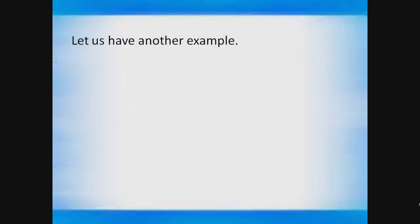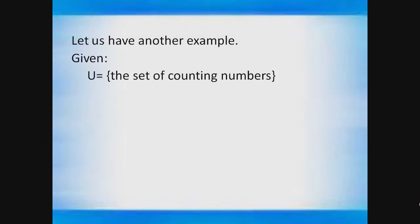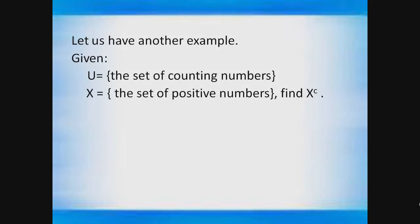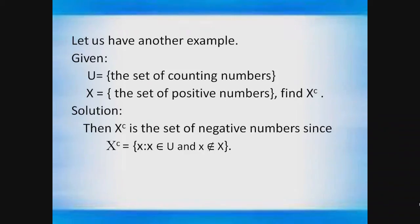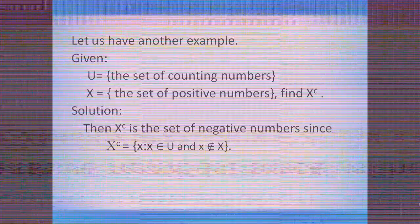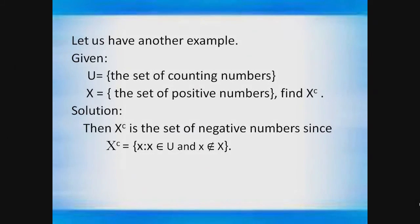Let's have another example. Given U is the set of counting numbers and X is the set of positive numbers, find X complement. Solution: X complement is the set of negative numbers, since X^c = {x such that x is an element of U and x is not an element of X}. Since X is the set of positive numbers, then X complement is the set of negative numbers.